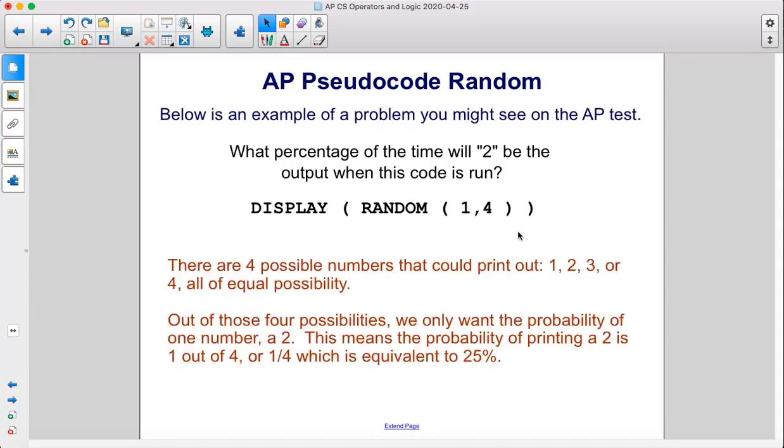There are four possible numbers that could print out: one, two, three, or four, all of equal possibility.